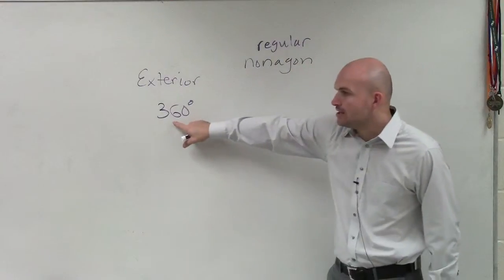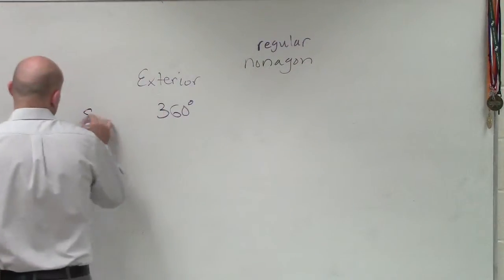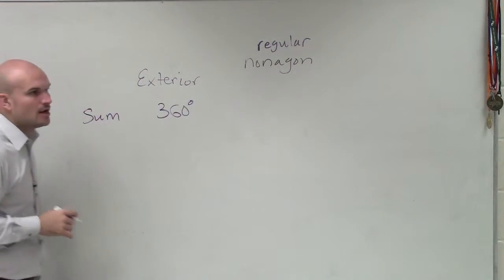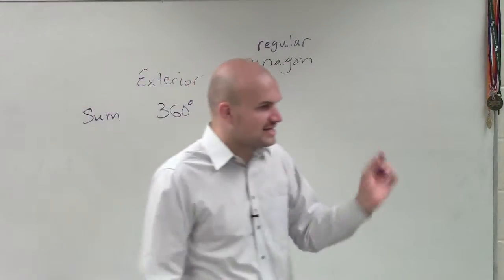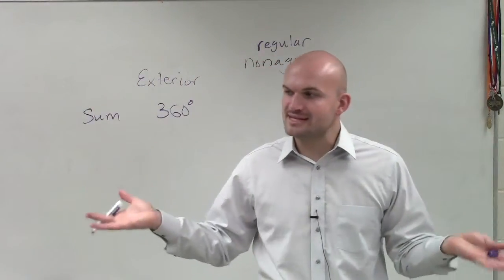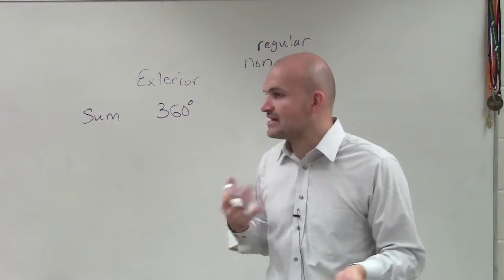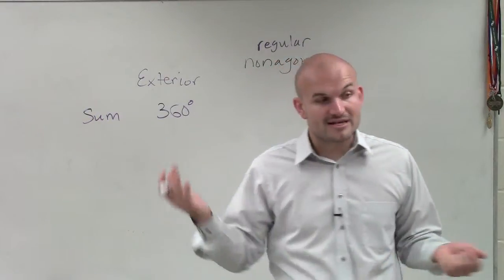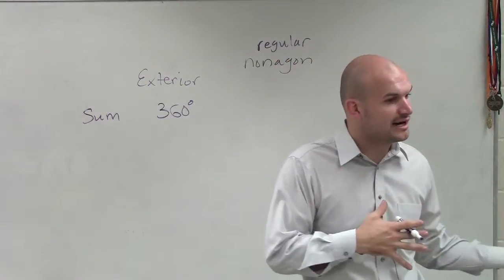So if the sum of the exterior angles is 360, what would be the measure of one of those exterior angles? So you take 360 and divide it by the number of exterior angles. Well, the number of exterior angles is the same as the number of interior angles, which is nine.